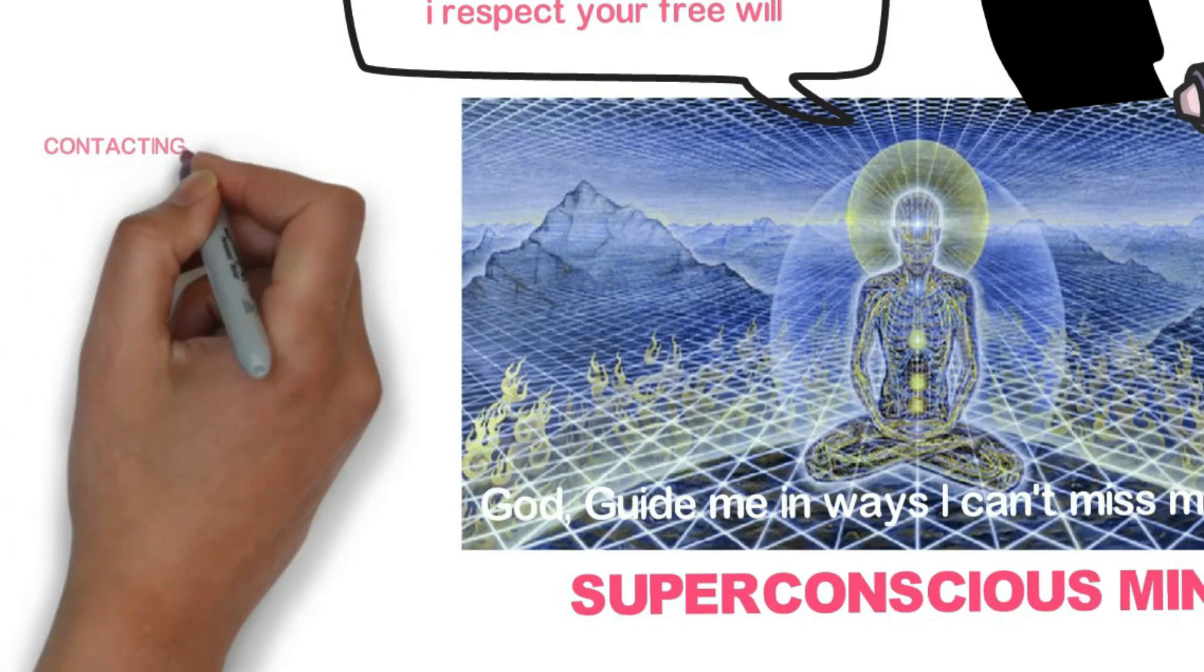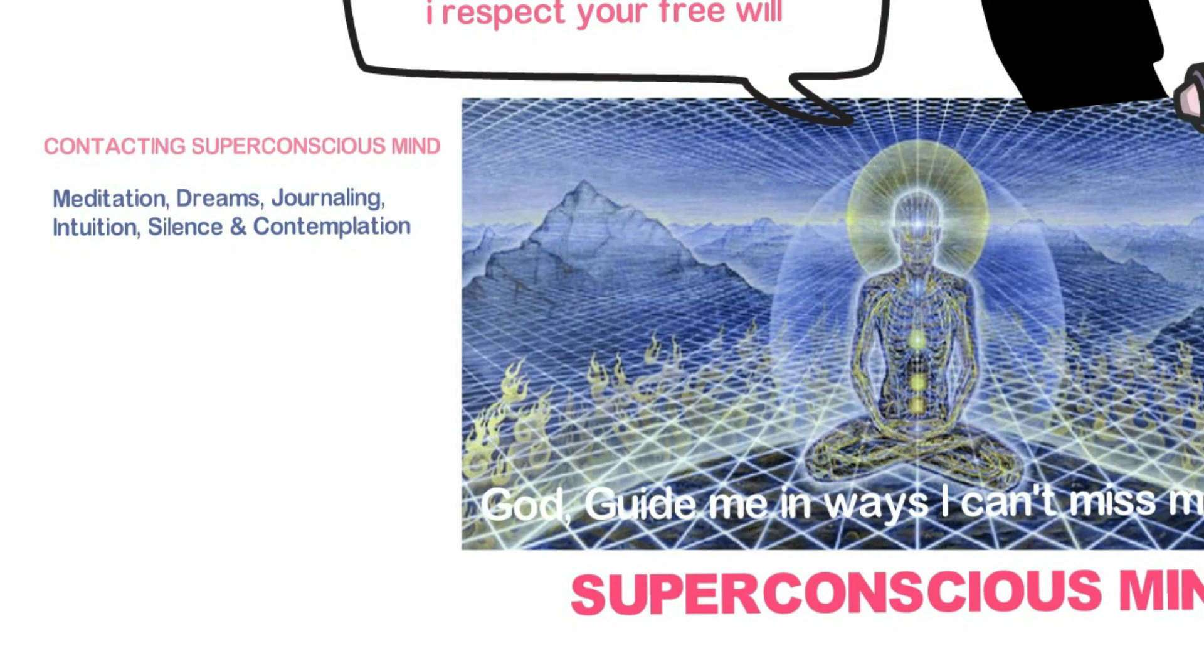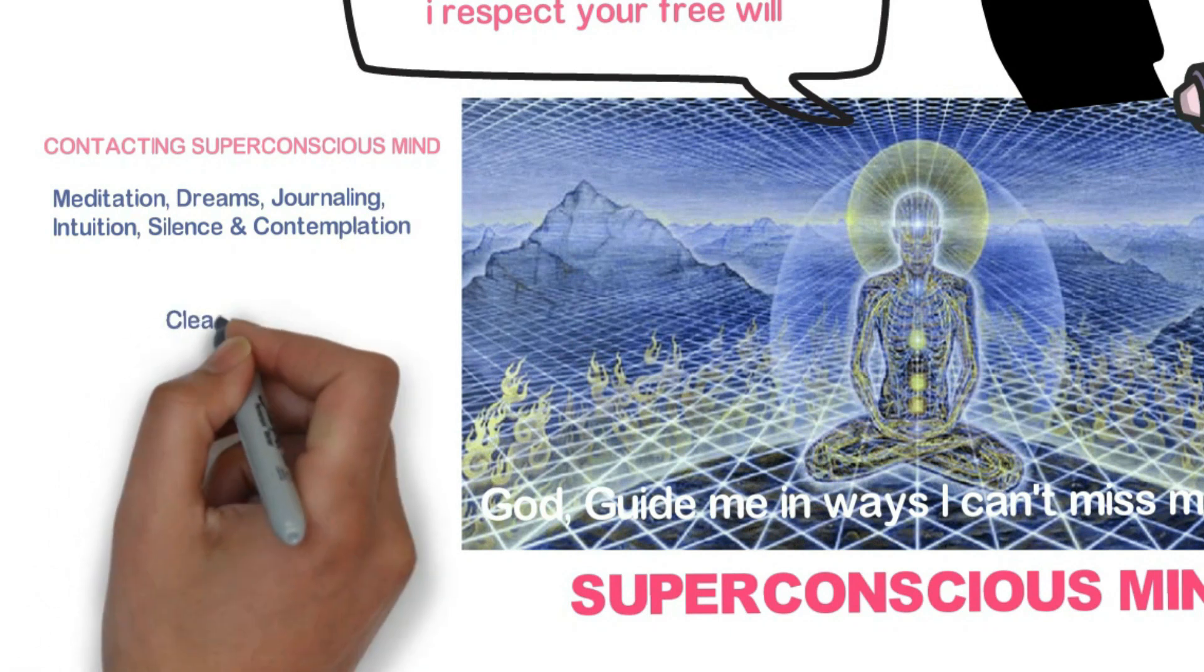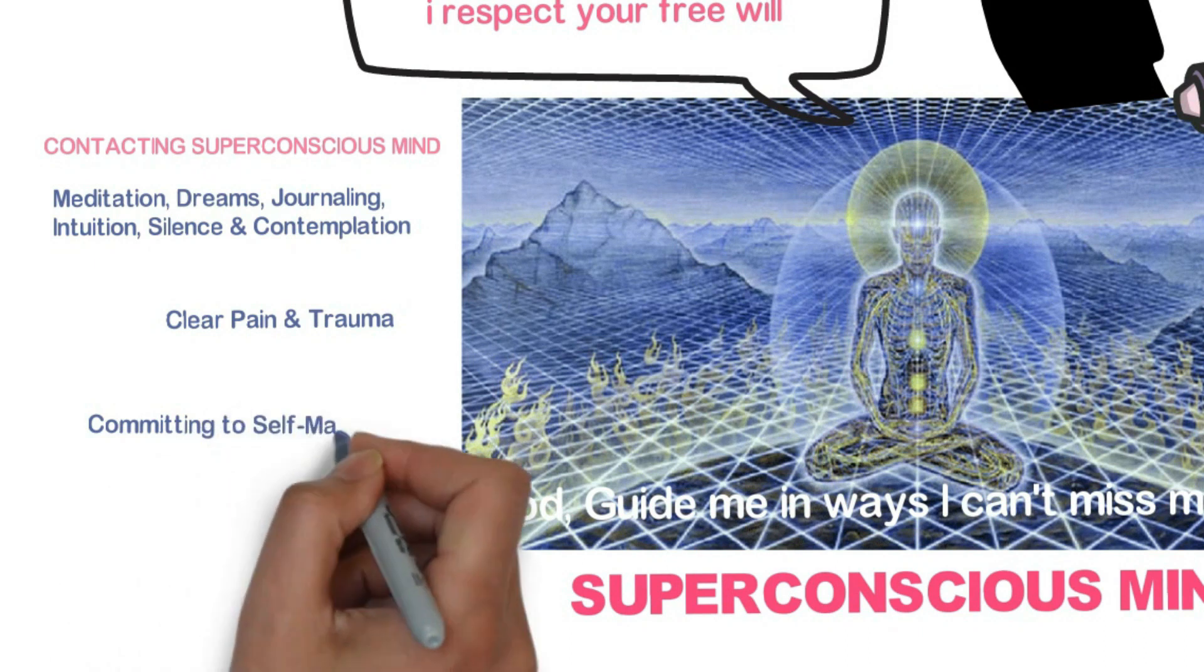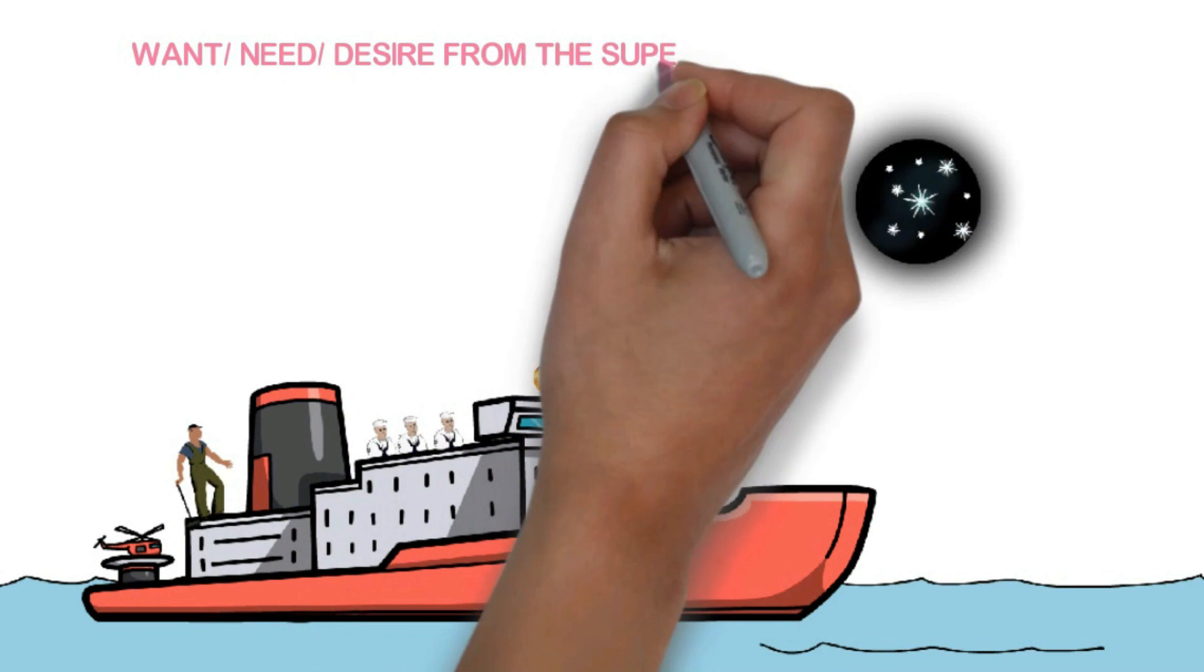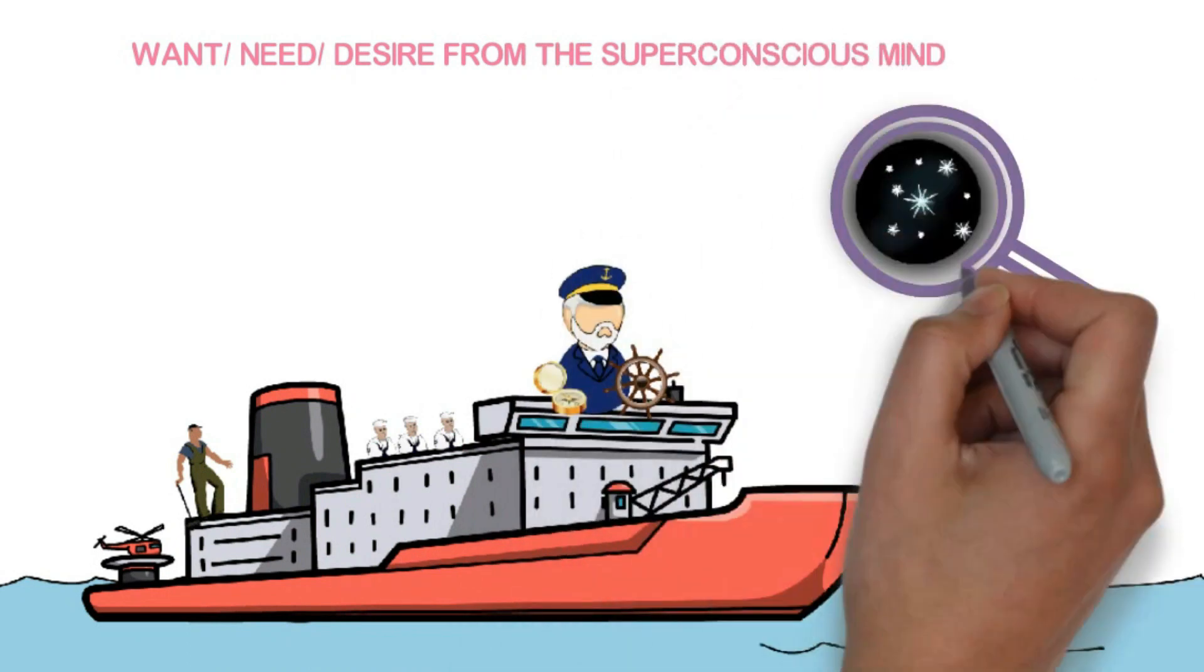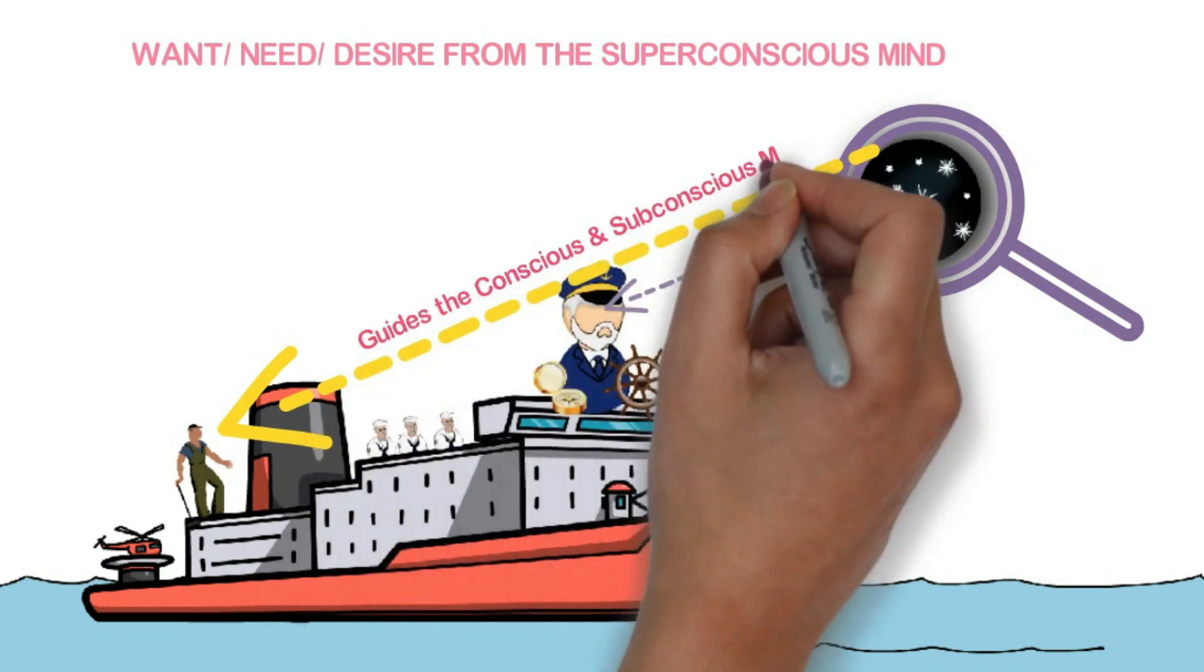The superconscious mind can be contacted through meditation, dreams, journaling, intuition, silence, and even contemplation. You can also contact this mind by consciously clearing the pain and trauma stored in the subconscious layers and by truly committing to self-mastery. What we want from the superconscious mind is that it guides both the conscious and subconscious mind like a trustworthy parent.